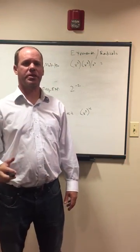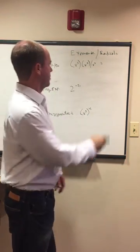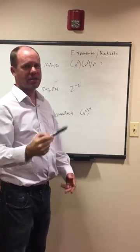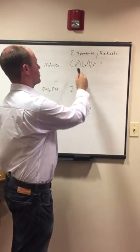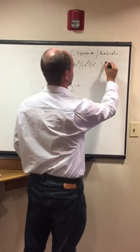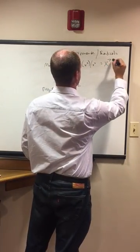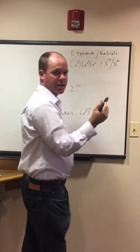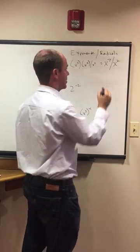Exponents and radicals. Let's take a look at three different types of problems here. We start off, we have x to the third times x to the fourth divided by x squared. What we need to know to do here is to add exponents then subtract. So we have this should equal x to the seventh divided by x squared. And then we subtract seven minus two. That's what we'll always do. X to the fifth is our answer on that one.